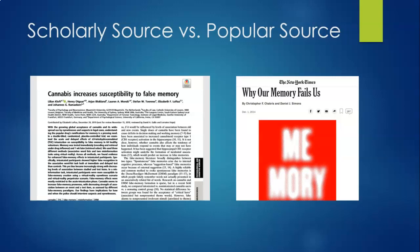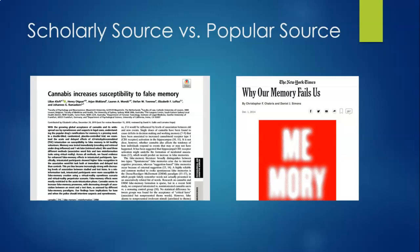Overall, scholarly articles are written by academics, researchers, or other professionals for these same groups, while popular pieces are written for a general, non-professional, non-specialist audience.